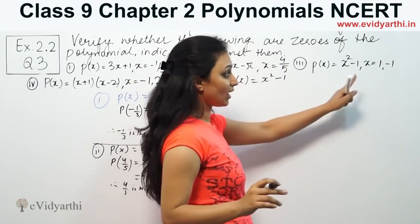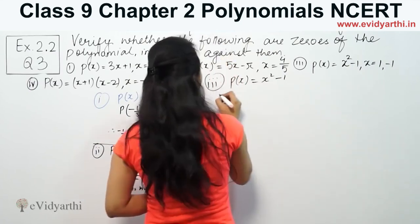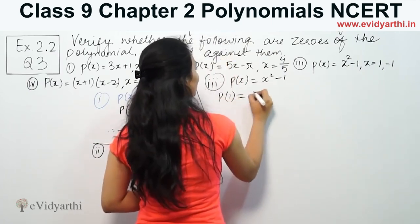For the third part, P(x) = x² - 1. We have two values: x = 1 and x = -1. So we have to check both of them. Suppose we put 1 first.